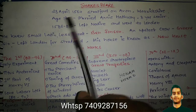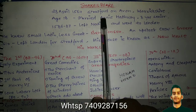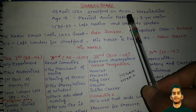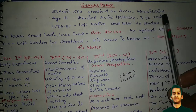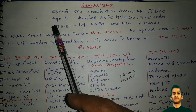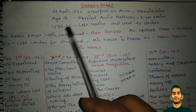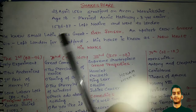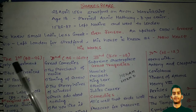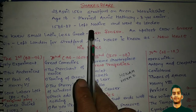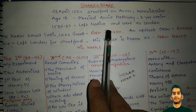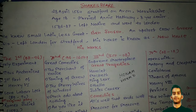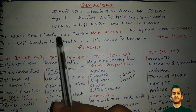Shakespeare was born on 23rd April 1564 in Stratford-upon-Avon. That's why he is also called the Bard of Avon. When he was 18, he married Anne Hathaway, who was eight years senior to him. He left his native place and went to London to try his luck in acting.